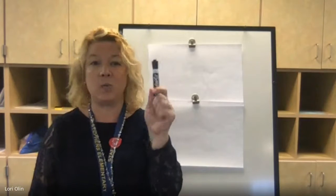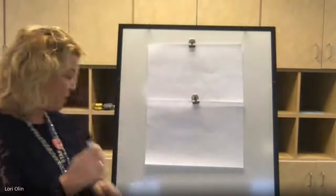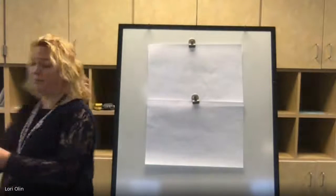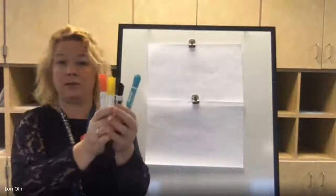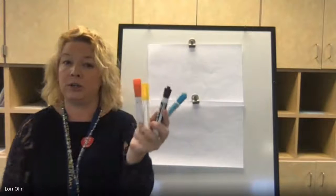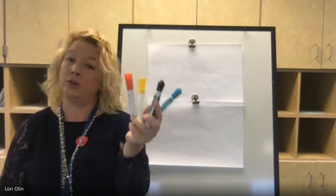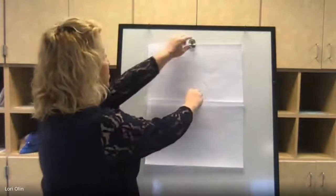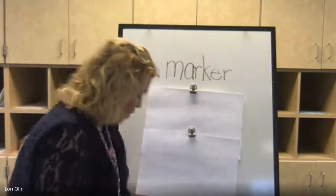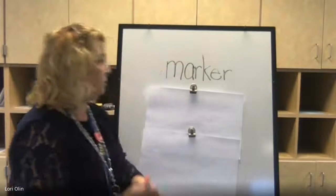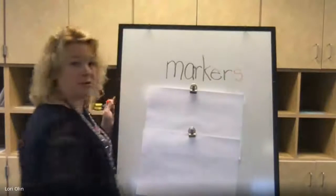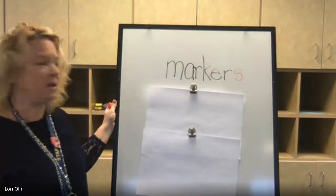So if I were to say, here is one marker, right? So here is one, here's a marker. What about if I have more than one? I don't say, here's four marker — there's four markers. So we would add an S to make it plural. We have one marker, but I have four markers. Adding that S means more than one. That's making it plural.